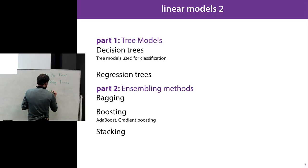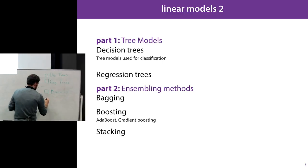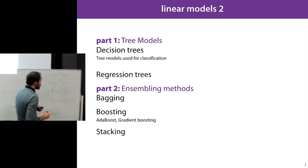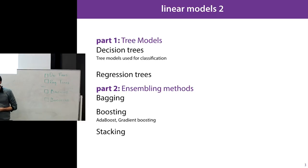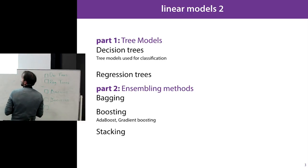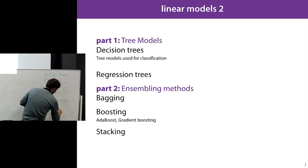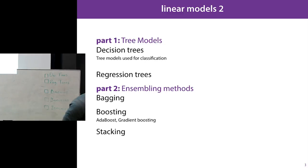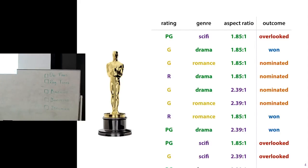The simplest ensembling approach is bagging, which we'll look at first. Then a slightly more complicated approach — boosting — of which there are two famous variants: AdaBoost and gradient boosting. We'll look at both in detail. Finally, we'll finish with stacking, which is quite useful in neural network settings. That's the plan for today.